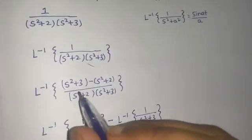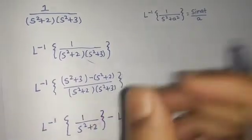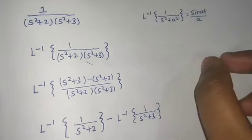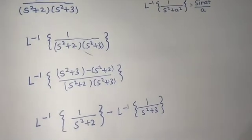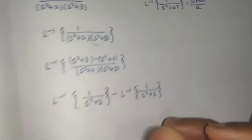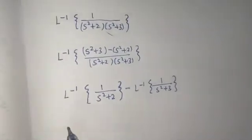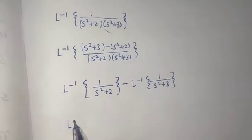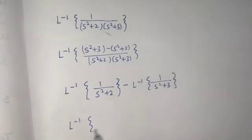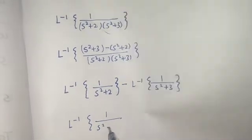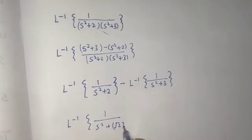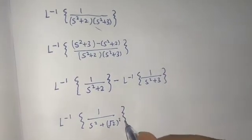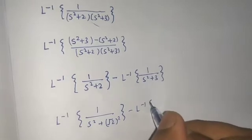We can distribute the Laplace inverse over the two functions. Now we have L⁻¹{1/(s²+(√2)²)} minus L⁻¹{1/(s²+(√3)²)}.